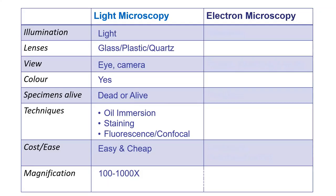Light microscopy is relatively cheap — a good microscope is less than $10,000, a decent fluorescence microscope maybe $20,000, and confocal is more expensive, but a hospital or lab can own one without breaking the bank. Magnification is about 10 to 2,000 times depending on the lens. With the 100x objective lens you get 1,000x magnification.